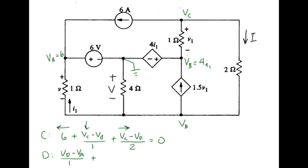Next current over is VD minus 0, because that's our reference node, divided by 4. Next current, this one now is a current source, 1.5V1. And finally the last current is VD minus VC over 2. That equals 0.